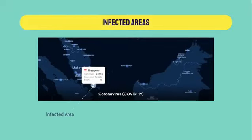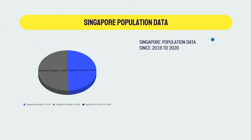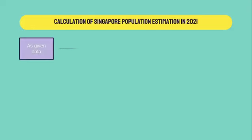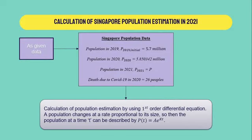Singapore is a small country located nearby Malaysia. The human population of Singapore in 2019 is 5,700,000, while in March 2020 it is 5,850,342 people. The total number of deaths due to coronavirus is 26 people. On the left side is shown a pie chart of the number of human population in year 2019, year 2020, and total deaths due to coronavirus.